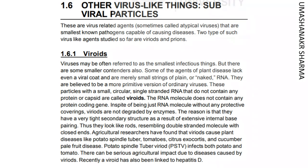Agricultural researchers have found that viroids cause plant diseases like potato spindle tuber, tomatoes, citrus exocortis, and cucumber pale fruit disease. Potato spindle tuber viroid, PSTV, infects both potato and tomato. There can be serious agricultural impact due to diseases caused by viroids. Recently, a viroid has also been linked to hepatitis D.